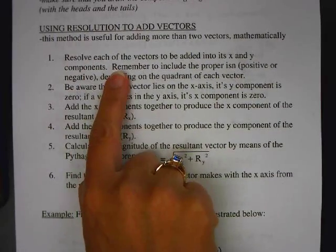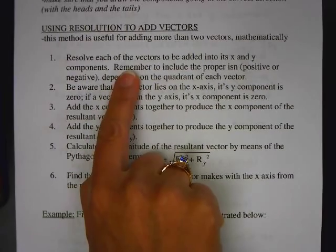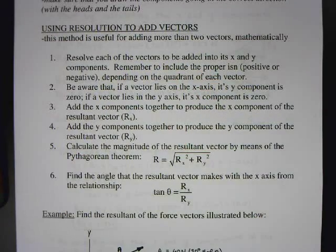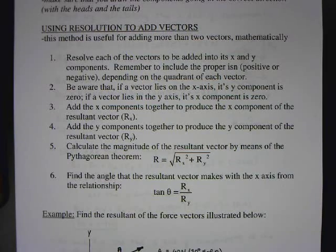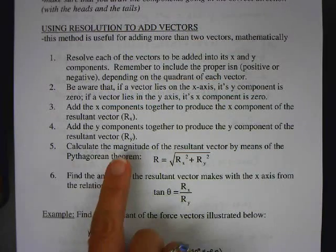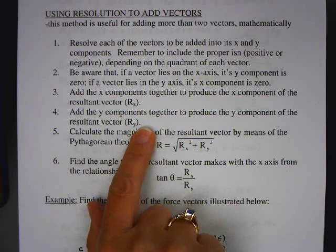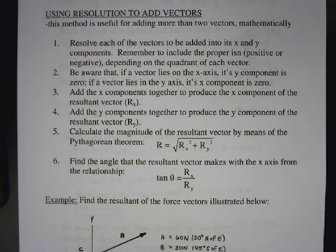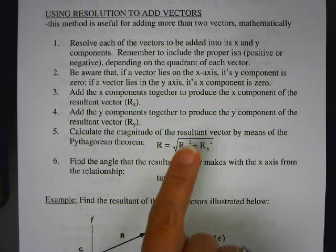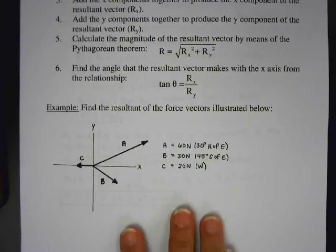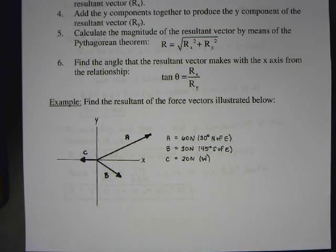So here's the method we're going to use. First, you're going to resolve each of the vectors to be added into its x and y components. You have to be careful about whether something is positive or negative. Then you're going to add up all the x components and all the y components. Then we use the Pythagorean theorem to find the resultant, and then tangent to find the angle. We're going to do this as an example.